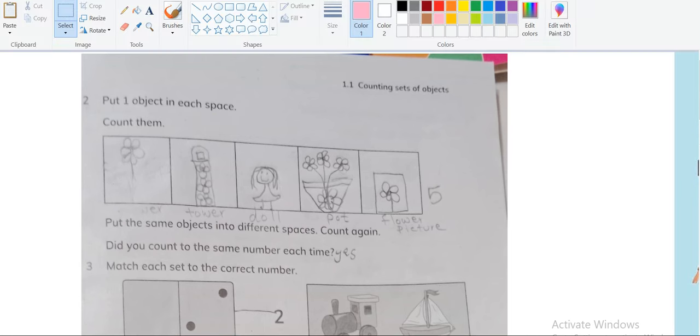Put one object in each space. The question is this: put one object in each space. So it means that we have to put one object in each space.